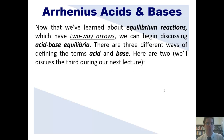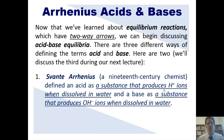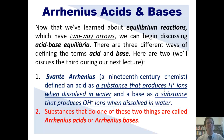Now that we've learned about equilibrium reactions in our previous chapter — which are reactions that have two-way arrows — we can begin discussing acid-base equilibria. There are three different ways of defining the terms acid and base; here are two, and we'll discuss the third during a later lecture. The first was proposed by a chemist named Svante Arrhenius. Arrhenius defined an acid as a substance that produces H+ ions when dissolved in water, and a base as a substance that produces OH− or hydroxide ions when dissolved in water. Substances that do either of these things are called Arrhenius acids or Arrhenius bases, respectively.